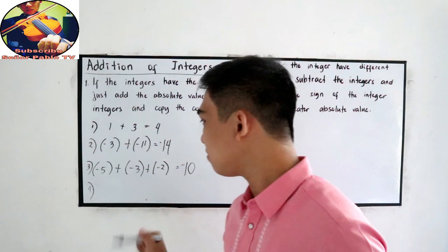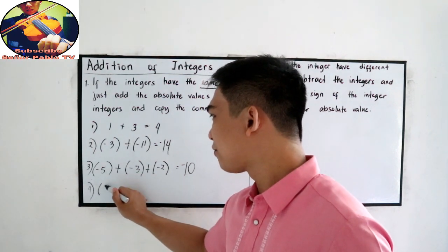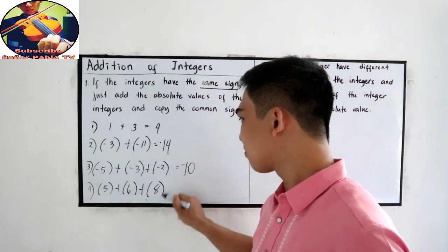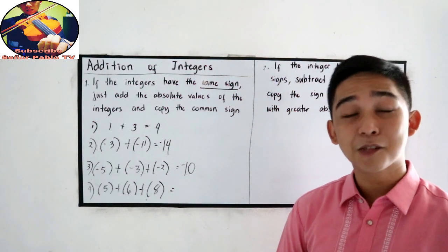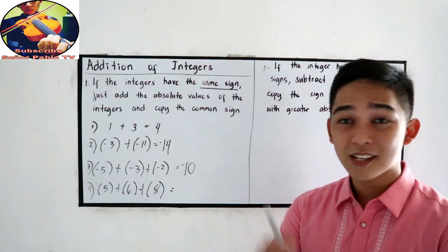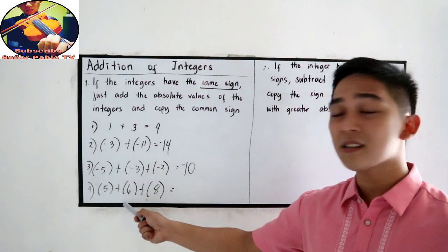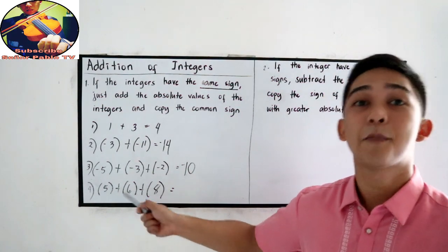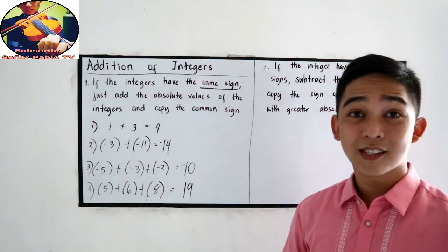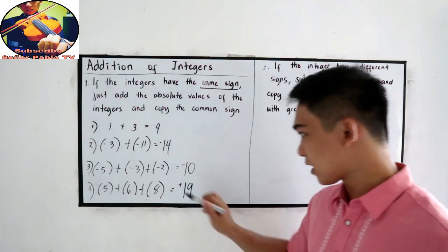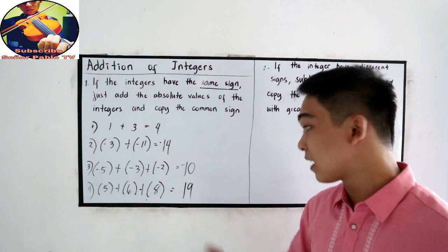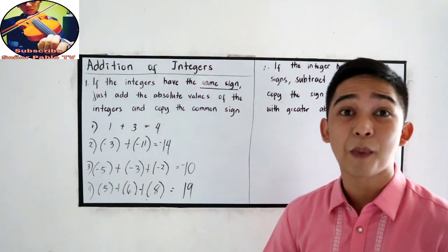Number four: five plus six plus eight. They are all positive, so just add the numbers. Five plus six is eleven, plus eight is nineteen. What is the sign? Positive. So we can write it as positive nineteen, or since it is positive, we can remove the positive sign — it is understood as a positive number.